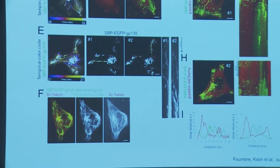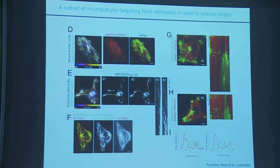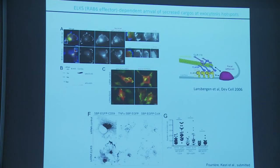Post-Golgi traffic is independent of microtubules — all these vesicles move along microtubules to reach the plasma membrane. By tracking all these vesicles with different markers we can define the tracks of vesicles leaving the Golgi, reaching the plasma membrane near focal adhesions. They use microtubule tracks, and interestingly they seem to use always the same microtubules — specific microtubules can be used several times to transport these carriers.